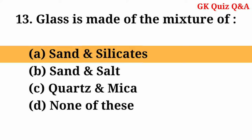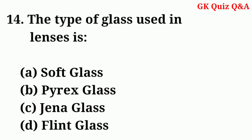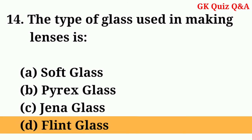Glass is made of a mixture of — Answer: A — Salt and silicates. The type of glass used in making lenses is — Answer: D — Flint glass.